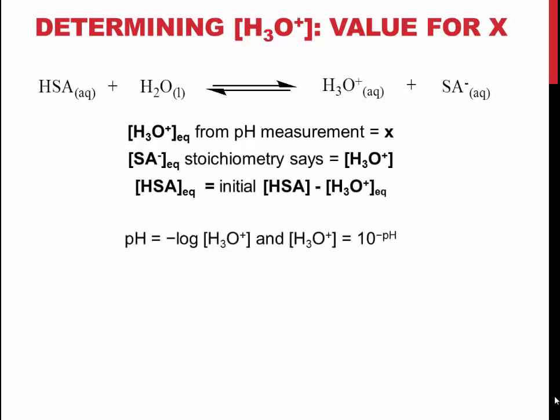pH is equal to the negative log of the concentration of H3O+. So, the concentration of H3O+ is equal to 10 to the power of the negative pH.